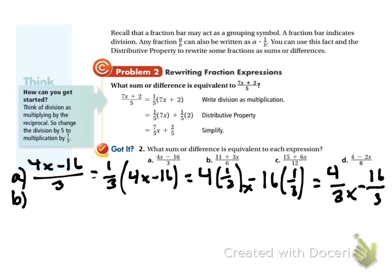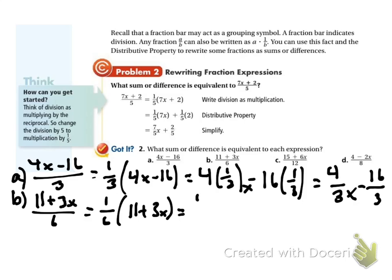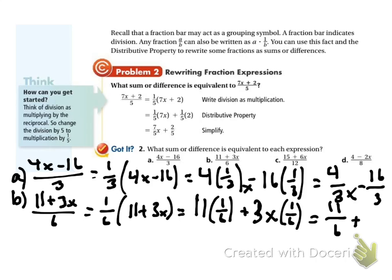Problem b: I've got (11 plus 3x) over 6. So I'll pull that 1/6 out front with (11 plus 3x). Now I distribute the 1/6 to my 11 and to my 3x. I get 11/6 plus 3/6 x, which then simplifies to 11/6 plus 1/2 x.